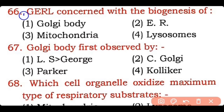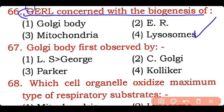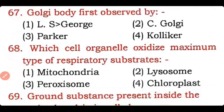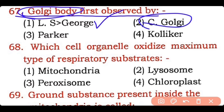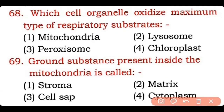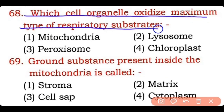Question 66: GERL is concerned with the biogenesis of — Golgi body, ER, mitochondria, or lysosome? Correct answer is option four — GERL is a complex formed by the Golgi apparatus, endoplasmic reticulum, and lysosome; it is involved in the synthesis of lysosomes. Question 67: Golgi body was first observed by — L.S. Jarge, Camillo Golgi, Parker, or Kolliker? Correct answer is option one — Golgi body was first observed by L.S. Jarge in 1867 and named as Golgi apparatus by Camillo Golgi in 1898.